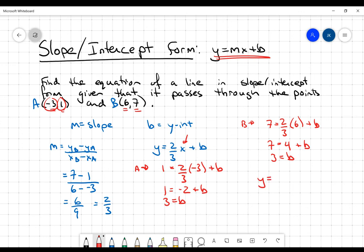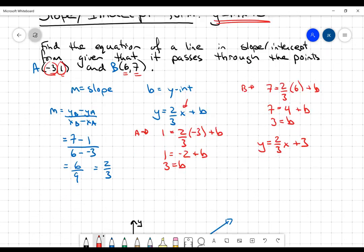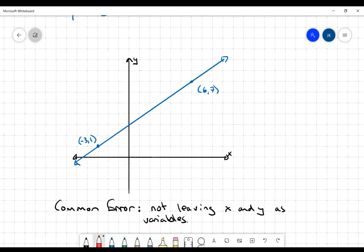So now my equation is going to be y equals 2 thirds x plus 3. Now just to show you that this is correct, I've sketched the line that goes through those two points. Notice that it does in fact have a y-intercept of 3. There's my b value. And if I pick any two points on the graph, like these two right here, my slope is going to be up 2 and over 3. So my slope is 2 thirds, my y-intercept is positive 3.